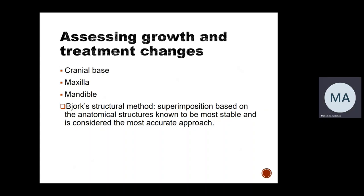We can use certain structures as reference cephalometric landmarks for superimposition. There are three main structures: the cranial base, which we superimpose different radiographs on to look at overall skeletal changes; the maxilla, to look at changes in the incisors and molars in the anterior-posterior and vertical dimensions; and stable structures in the mandible to assess lower incisor and molar position.